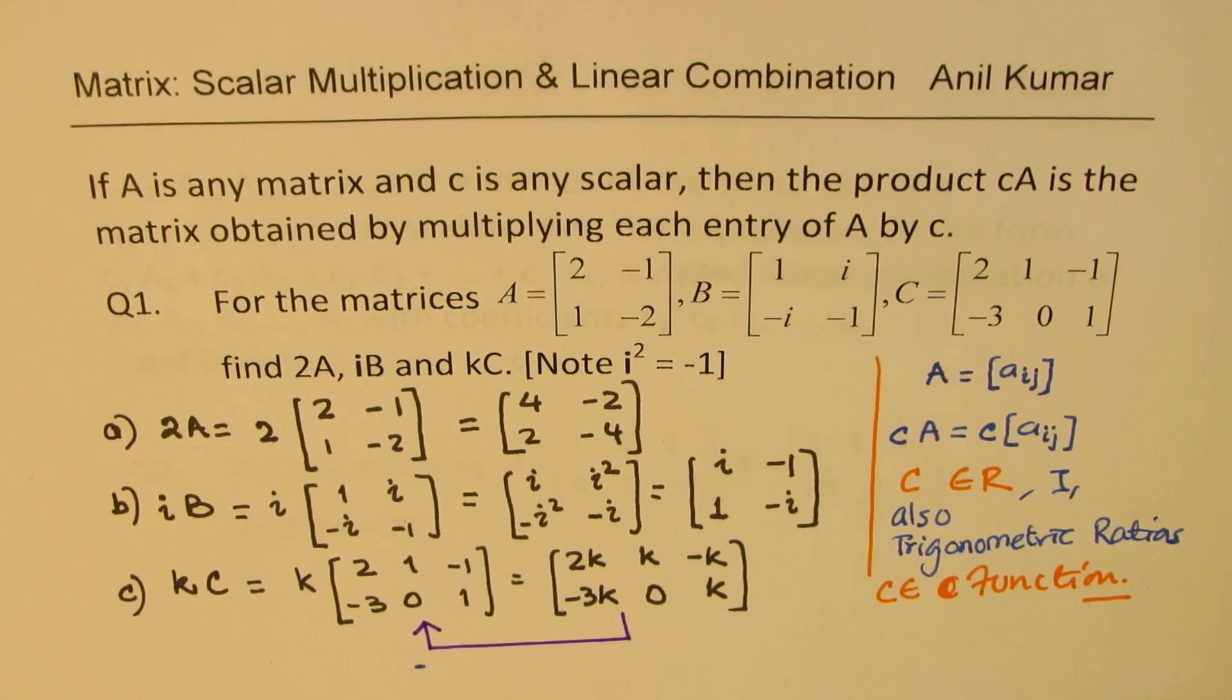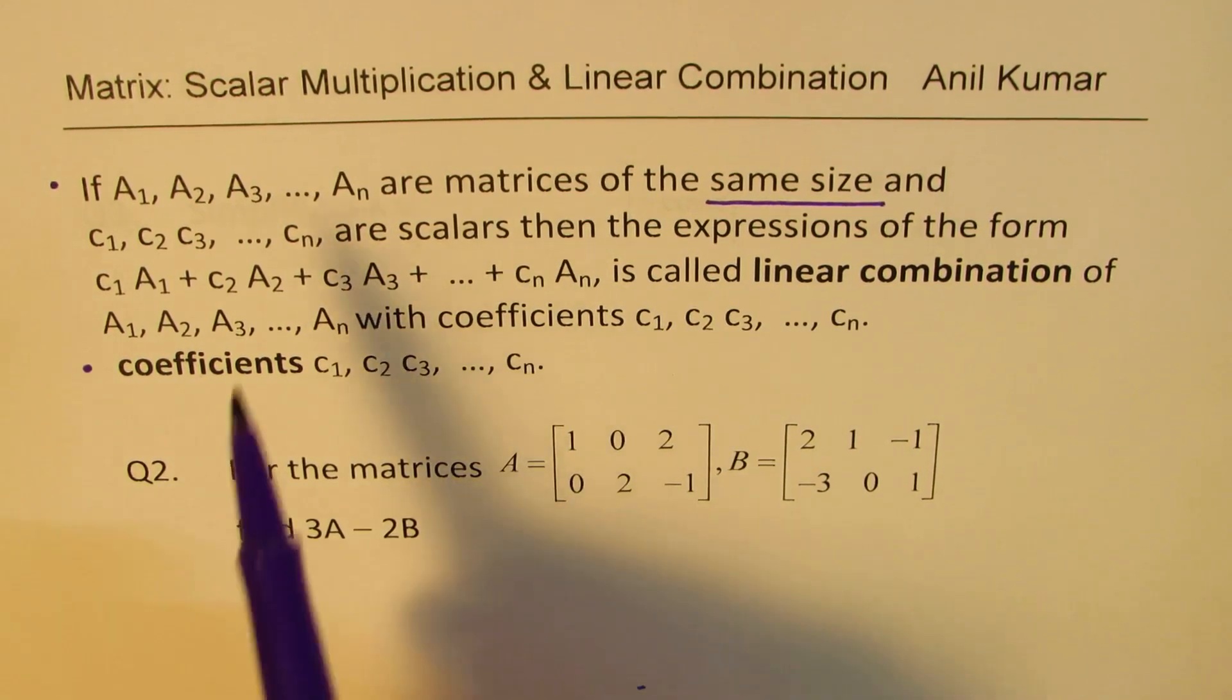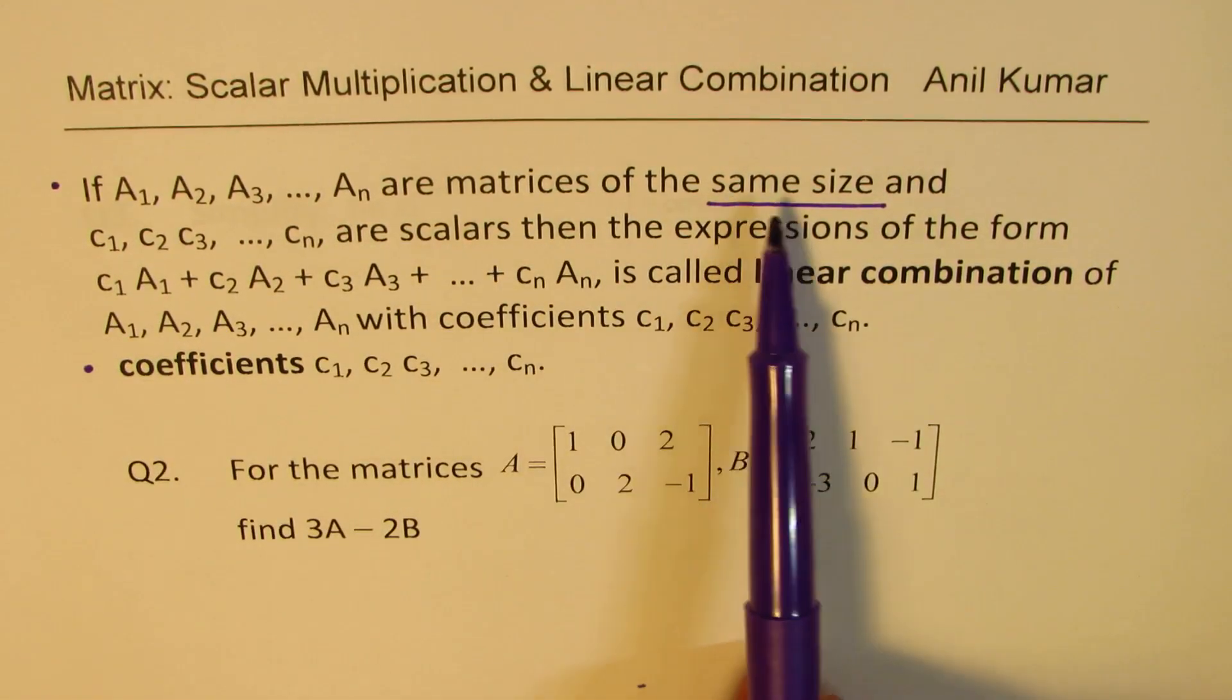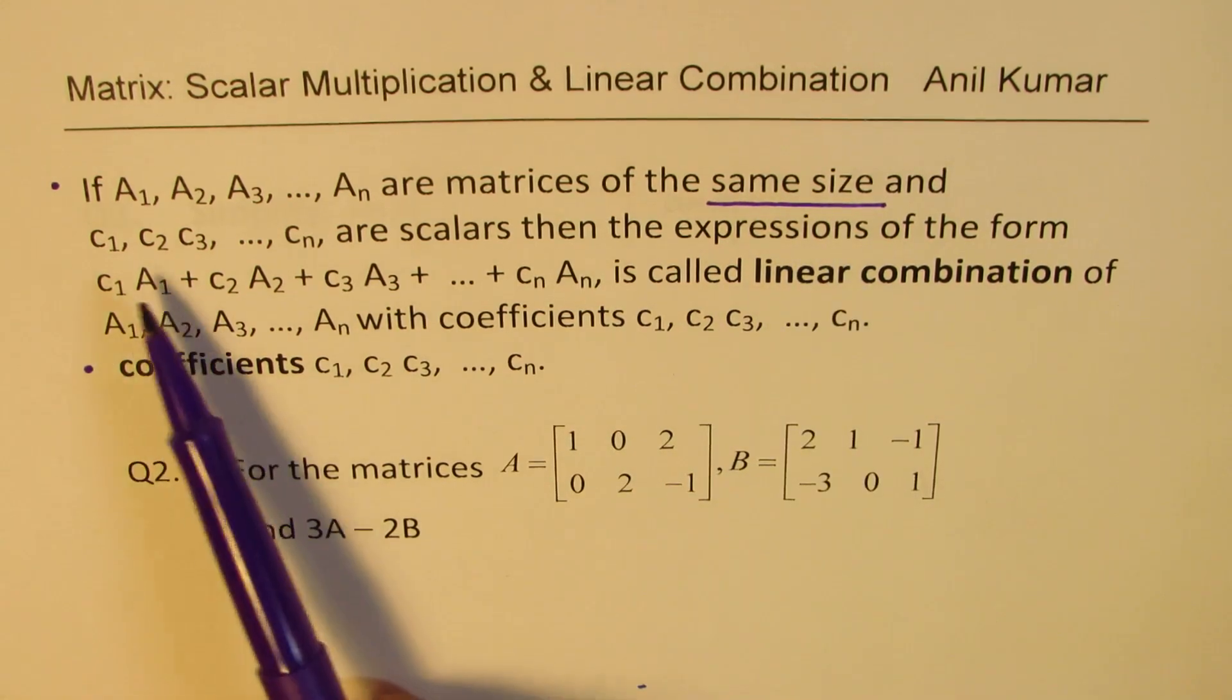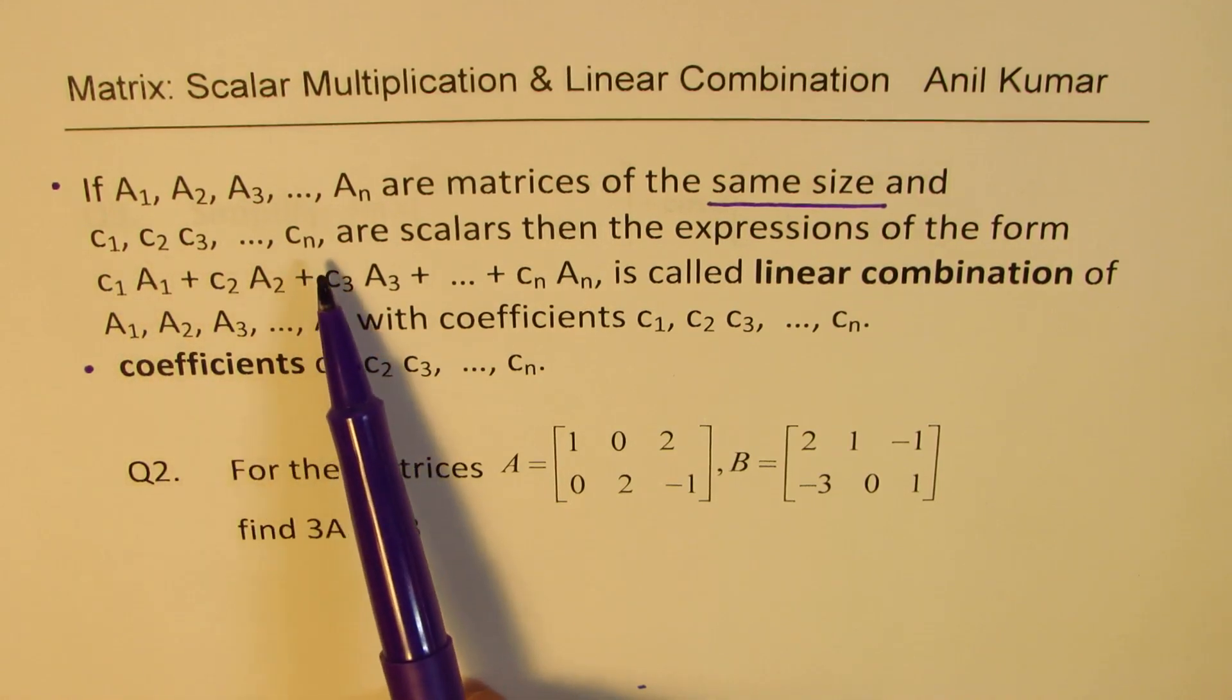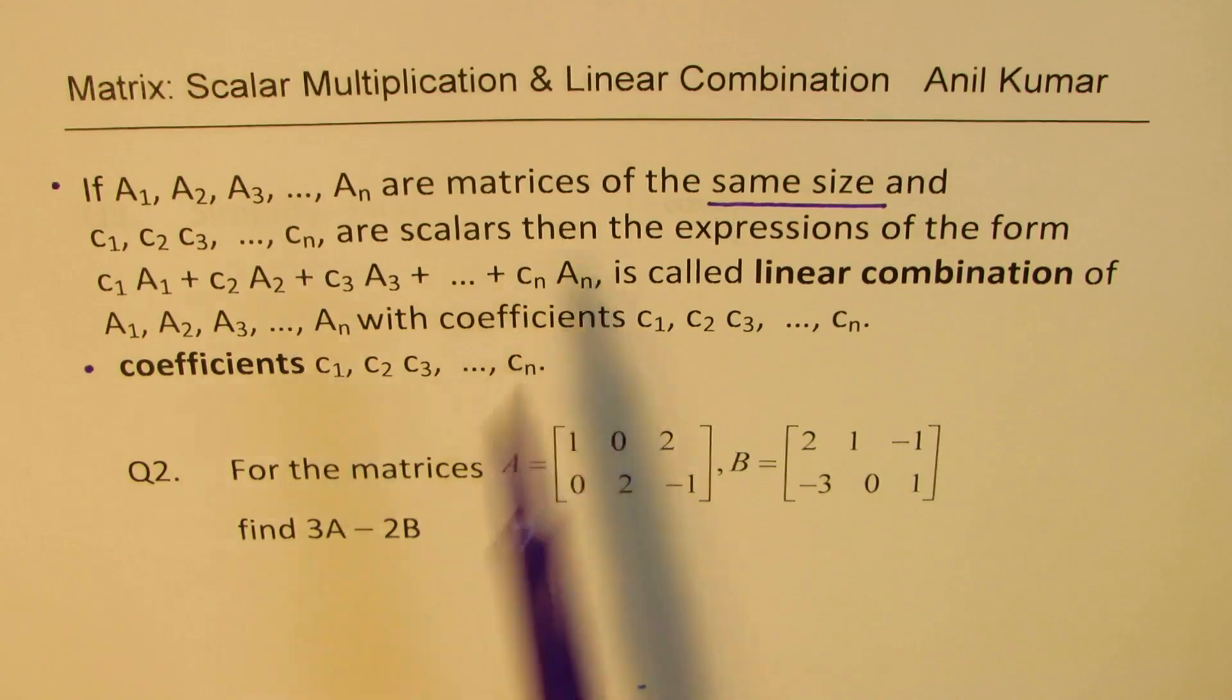So let's continue and see what does it mean by linear combination. So if we have many matrices, we have taken n matrices here, they should be of the same size, that is important. And each one of them is multiplied by some scalar c1, c2, c3, cn, then we get an expression which is like combination of these.